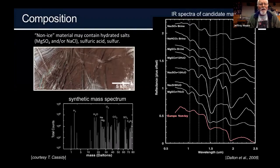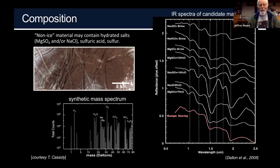Regarding composition: there is dark material on Europa, and numerous studies have tried to determine what it is. There appear to be hydrated salts — particularly magnesium salts or more classically sodium salt like table salt. There also seems to be evidence for compounds derived from the desiccation of sulfuric acid, as well as outright sulfur. Some sulfur could be implanted from the sulfur clouds emitted by Io, but we also must wonder if there isn't substantial magnesium sulfide salt in Europa's ocean. We hope to find that out by analyzing fresh patches of material erupted on the surface with Europa Clipper.